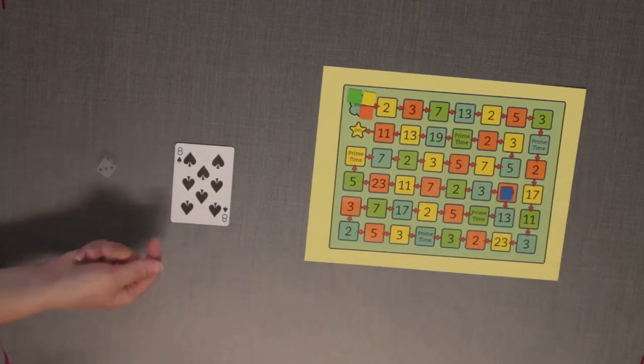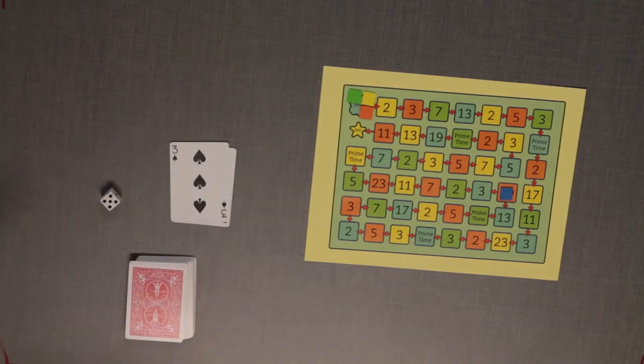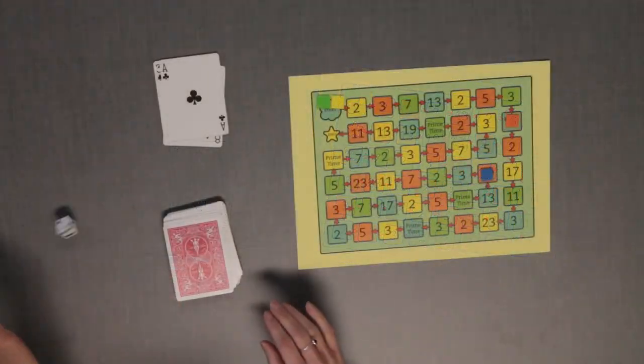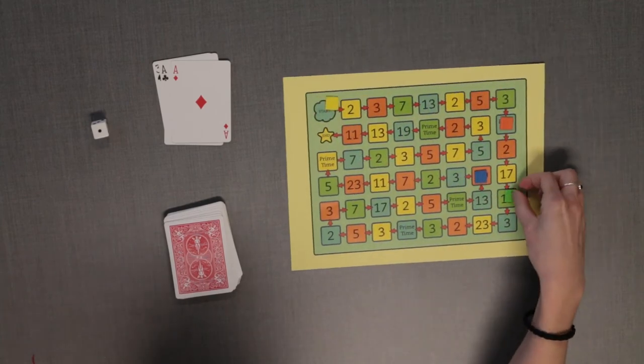When a player has a number that is prime but over the number 23, they may move to the next prime time space. When the prime number is under 23, the player may advance to the next space with that prime number.